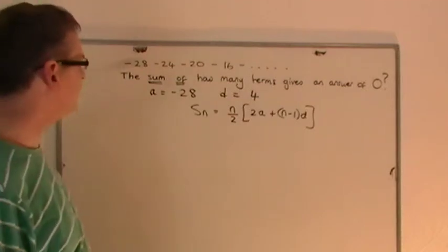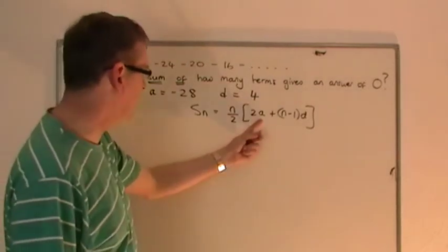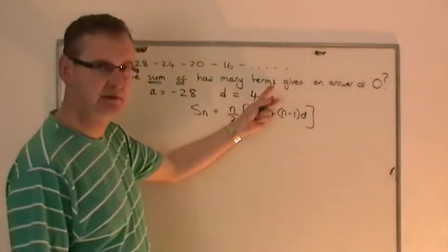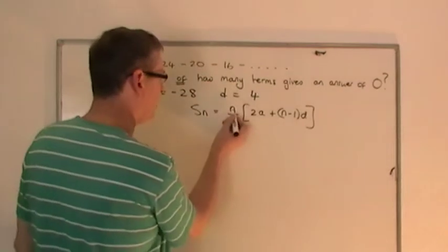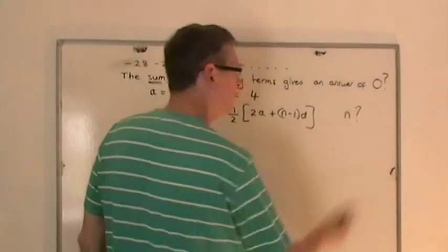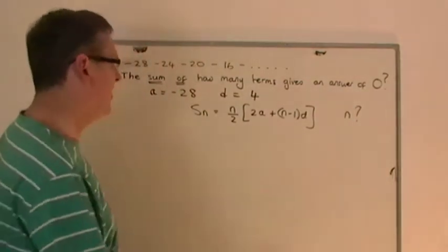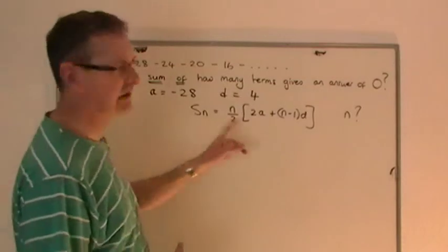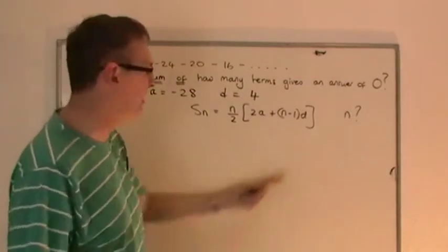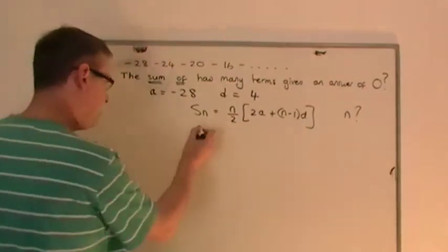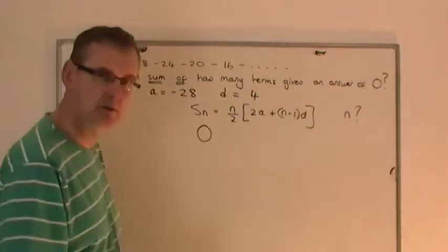Now, I do know the value of a, I do know the value of d, no problem. Do I know how many terms? No I don't. So I do not know the value of n. But I do know, as well as a and d, that the sum of all these terms, when I add them up, gives an answer of zero. So the sum of n terms, I do know. It's zero. So I can replace S_n with zero.